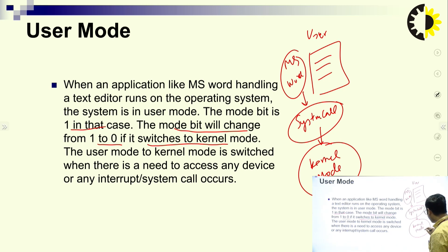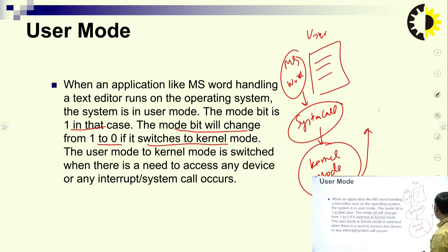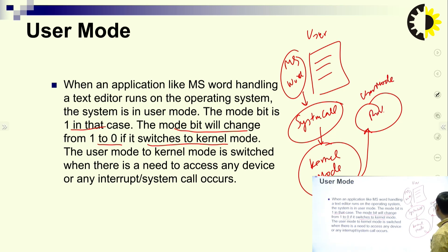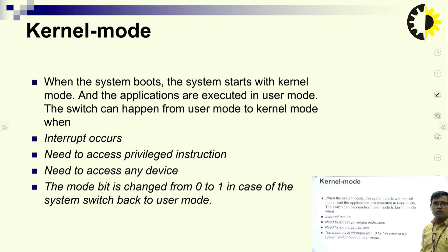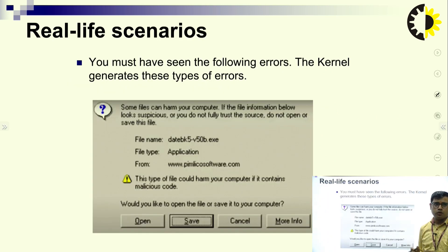The response from kernel mode comes back — the user wanted a printer and the kernel responds, providing the printer to the user. The request returns to user mode. This is all about user mode and kernel mode.